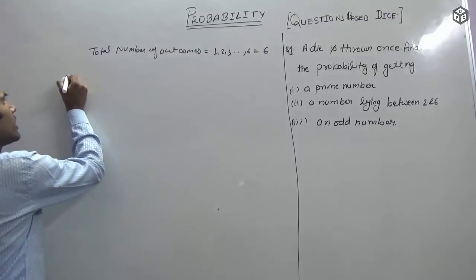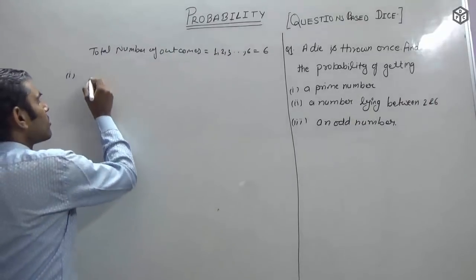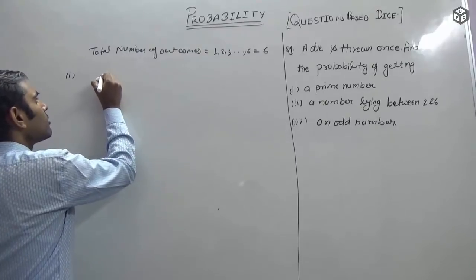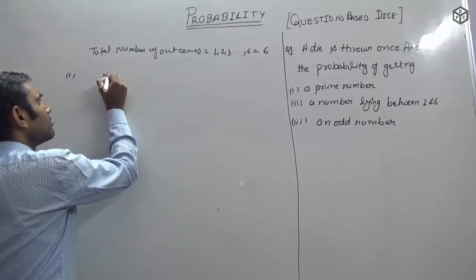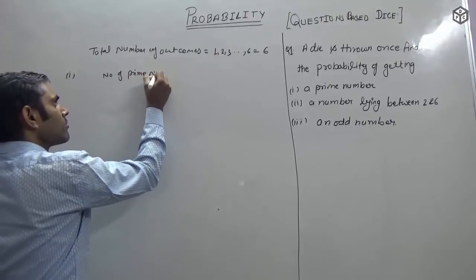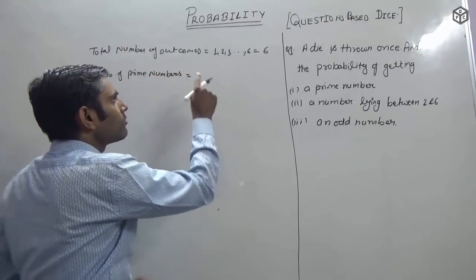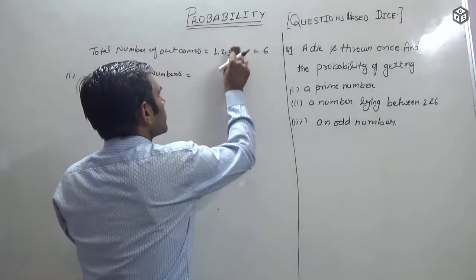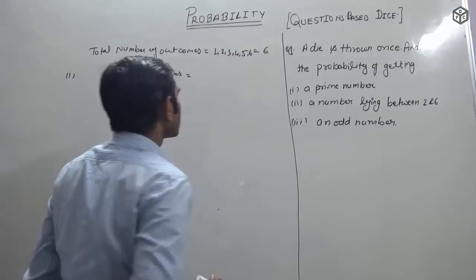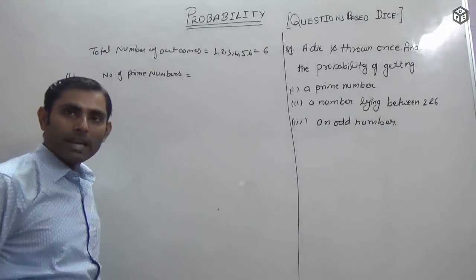The first question asks about prime numbers — how many favorable outcomes are there for prime numbers? From 1 to 6: 1, 2, 3, 4, 5, and 6. Where are the prime numbers among these? First, you should know what a prime number is.